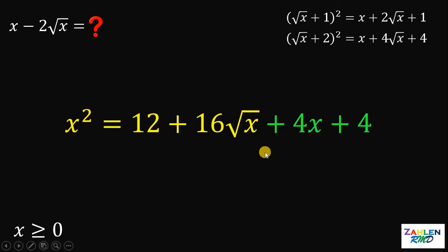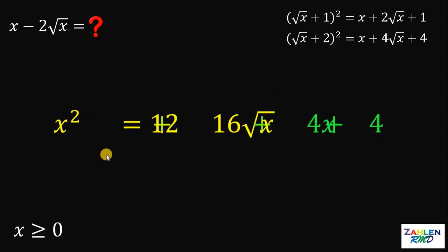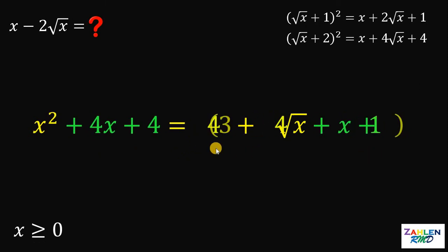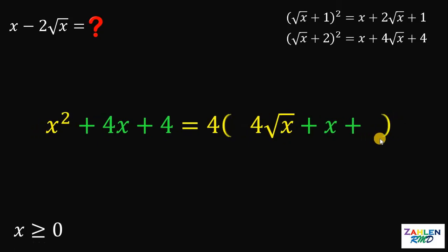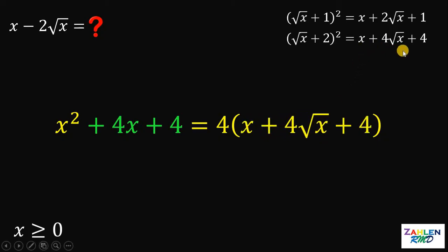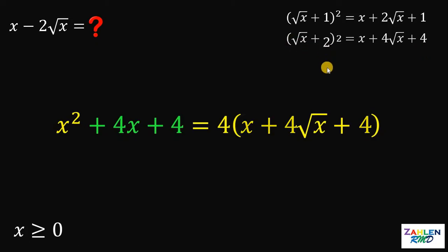Take note that we need to add 4x plus 4 on the left side to make it balanced. Now let's focus on the right-hand side. Let's factor out this 4. Then 3 plus 1 will give us 4. Rearrange some terms a little bit to make it equivalent to x plus 4 times square root of x plus 4. And we know that it is equivalent to square root of x plus 2 quantity squared.